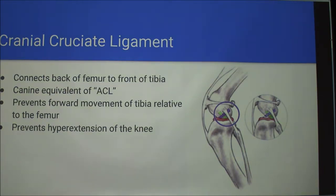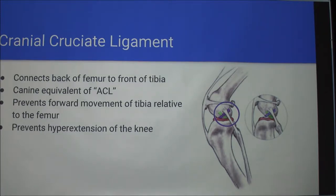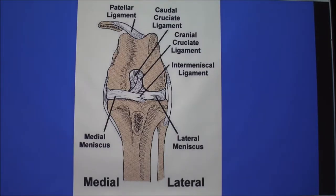The caudal cruciate ligament is the green one that goes in the opposite direction. They connect the femur and the tibia together, so it's like the ACL in humans. It prevents the tibia from going forward relative to the femur and keeps the knee from hyperextending.